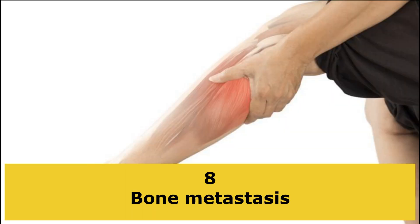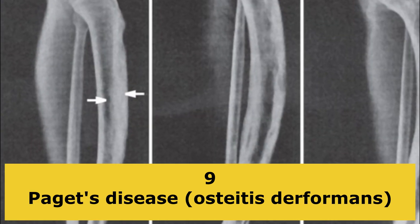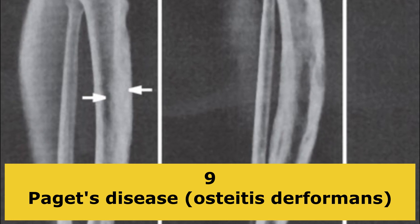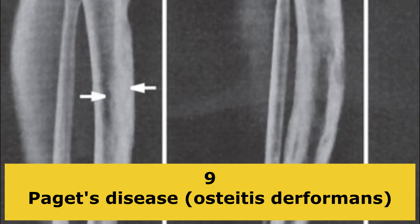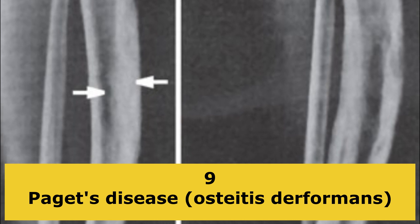High bone alkaline phosphatase levels may indicate: Bone metastasis, which occurs when cancer cells from elsewhere in your body spread to your bones. Paget's disease of bone, also known as osteitis deformans. This is a rare chronic bone condition in which there is extensive deterioration and regrowth of affected bones.